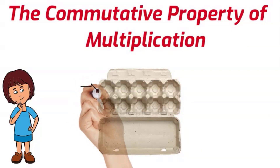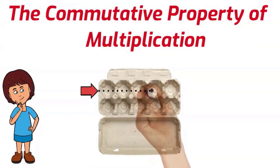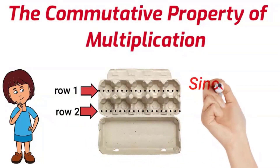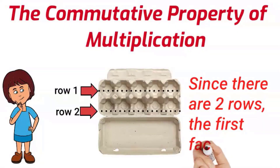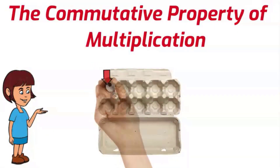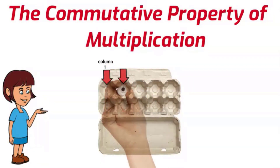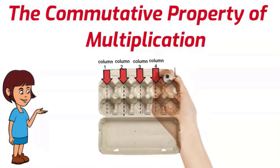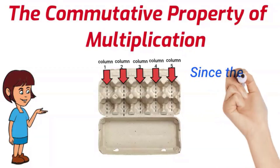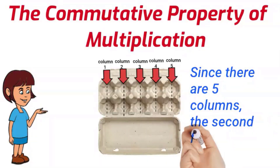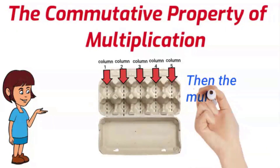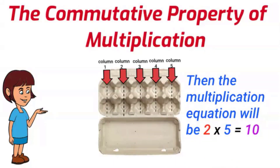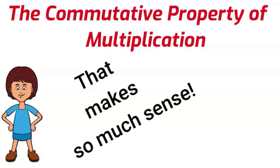Think about it this way: here we have an egg carton. This is one row — rows move from side to side. So this is another row, and we have two rows. Since there are two rows, the first factor is two. Now let's outline the columns: one, two, three, four, five columns. Columns go up and down. This egg carton has five columns, so the second factor is five.